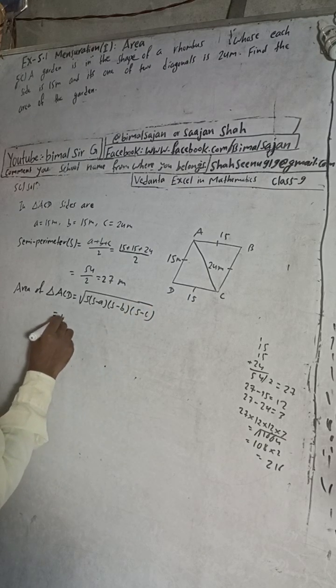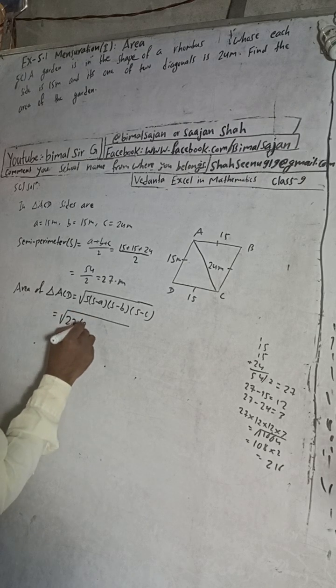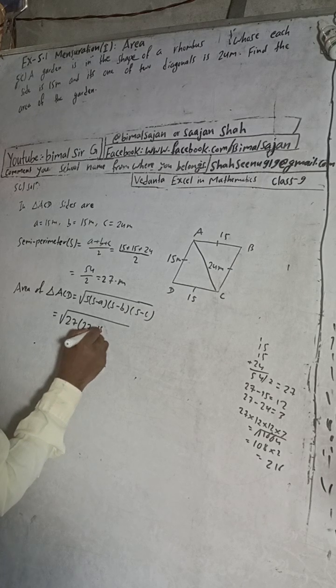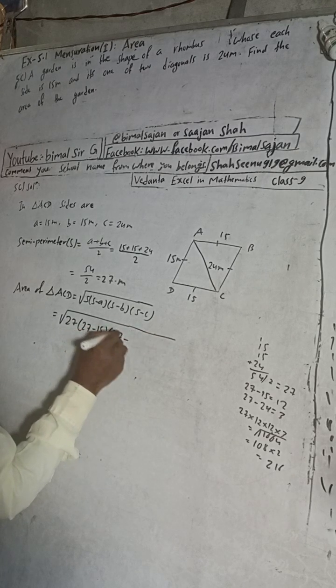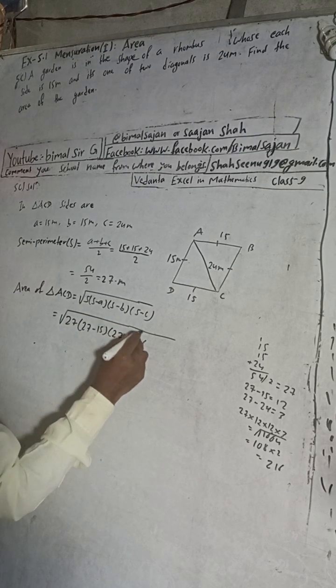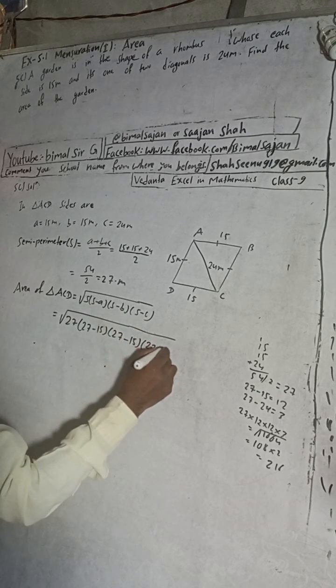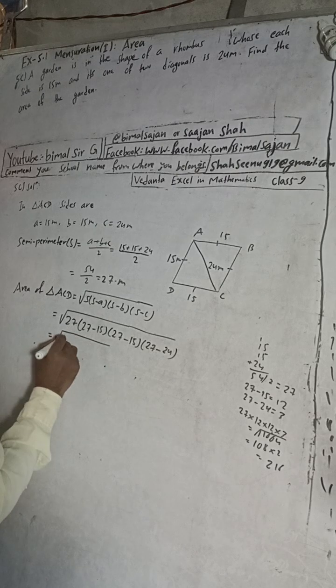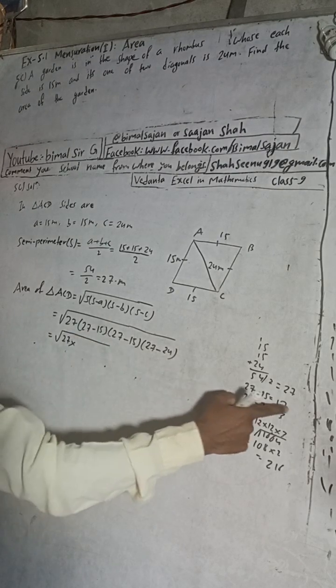s is 27, in bracket s minus a: 27 minus 15, s minus b: 27 minus 15, and then s minus c: 27 minus 24. This is 27 into, 27 minus 15 is equal to 12.